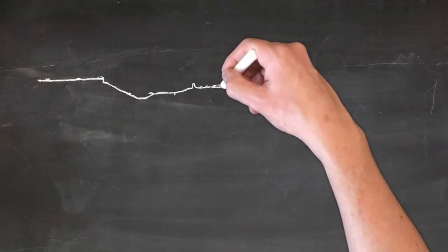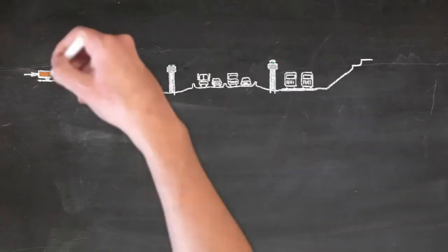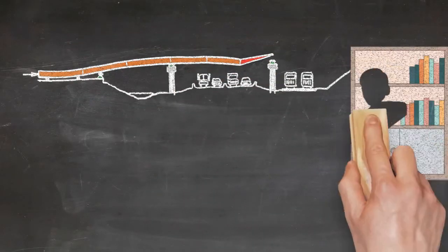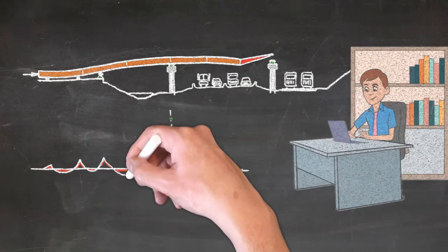For unconventional erection schemes such as incremental launching, you should verify that your superstructure has adequate strength and stability during all stages of erection.